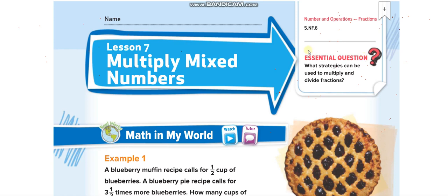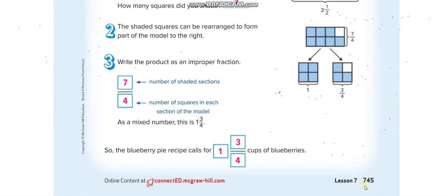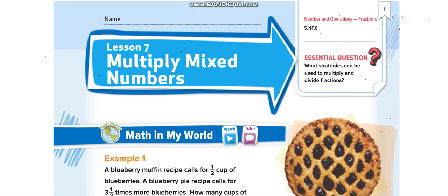Good morning everyone, today's lesson for grade 5 chapter 10 lesson 7 multiply mixed numbers page number is 745. I hope all of you have your books and pencils in your hands and I hope that all of you have already subscribed my channel learn math with Mr. Saad and also press the bell icon to get notified for every new video.